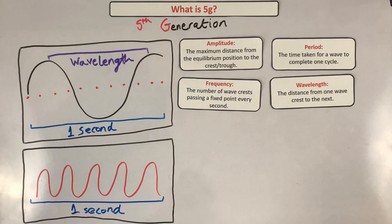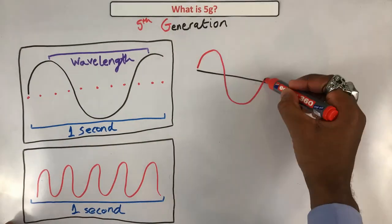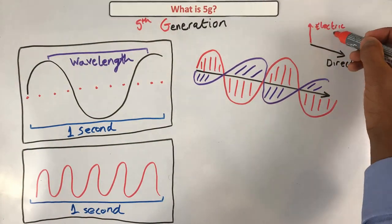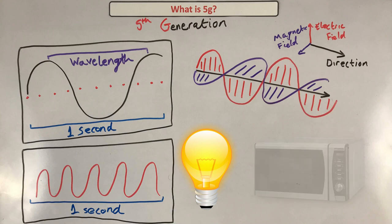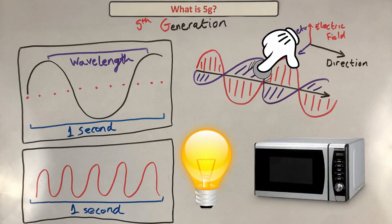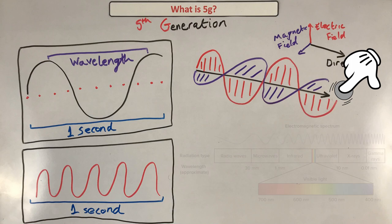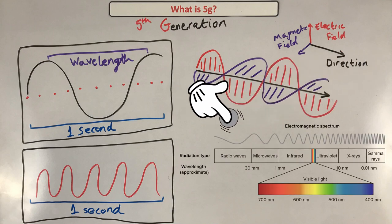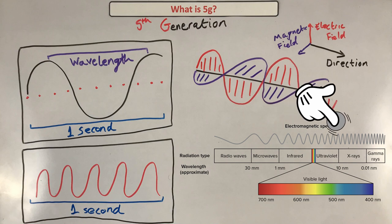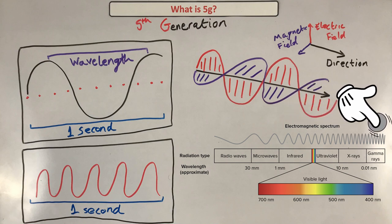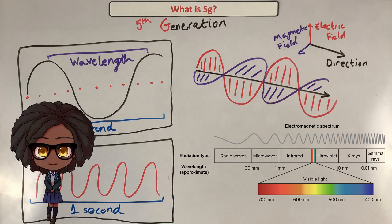5G is an electromagnetic wave — it has an electric section and a magnetic section that are interlinked. Light waves and microwaves are examples of electromagnetic waves, or EM waves. This is the full spectrum. Notice the difference in the structure of the wave as we move from radio waves to gamma waves — the wavelengths get shorter and the frequency increases.